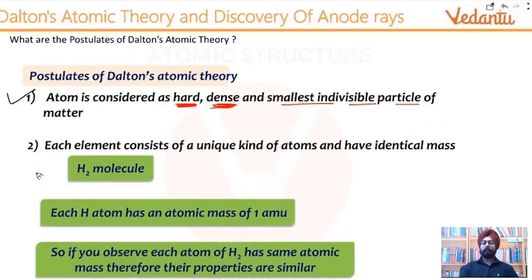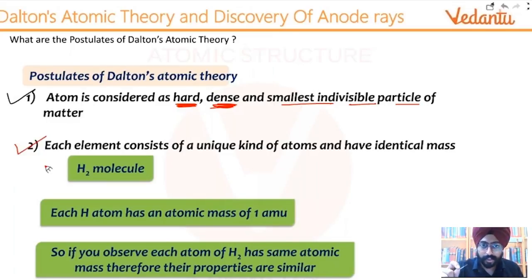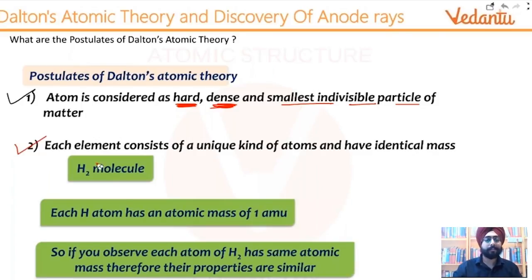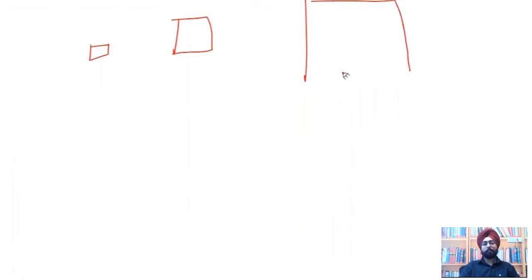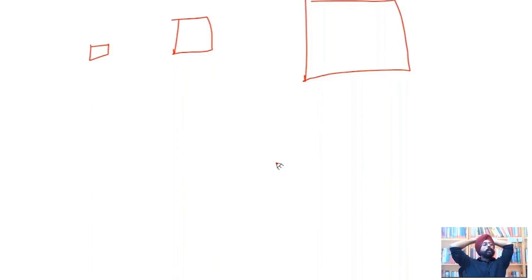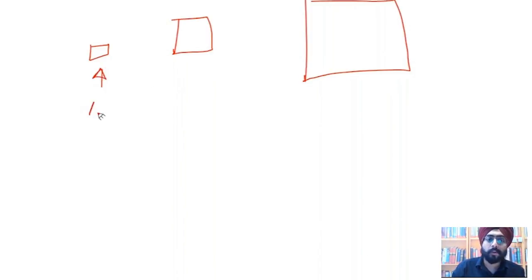The second postulate says: each element consists of a unique kind of atoms and they have identical mass. This statement looks very simple. Imagine you have three 3D boxes kept in front of you and you're wondering what these boxes are made of. This smart guy Dalton says that all three boxes are different — this box is made up of A, this one of B, and this one of C.